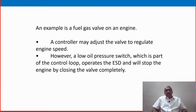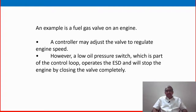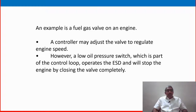Let's look at some simple examples to understand equipment protection. An example is a fuel gas valve on an engine. A controller may adjust the valve to regulate the engine speed and fuel injection. However, a low oil pressure switch, which is part of the control loop, operates the ESD and will stop the engine by closing the valve completely.